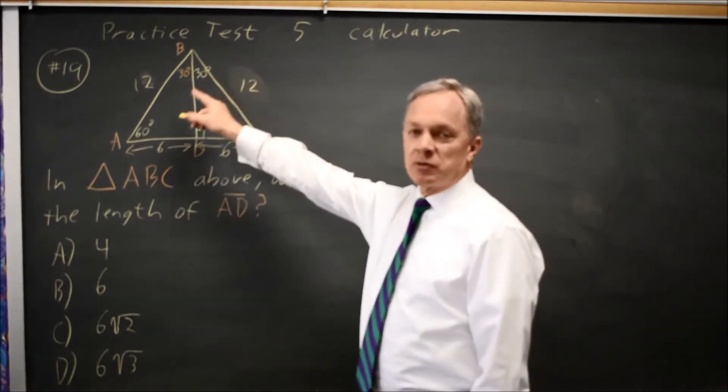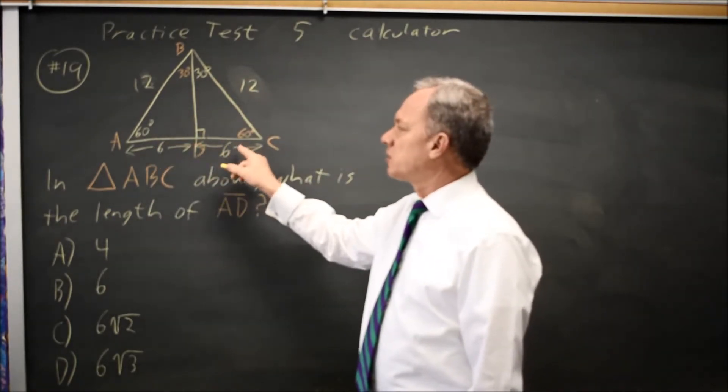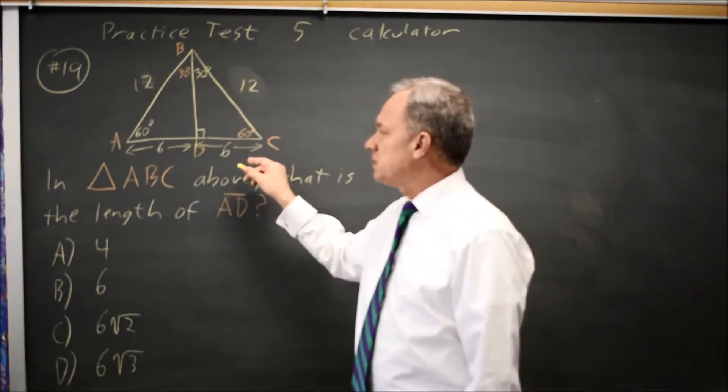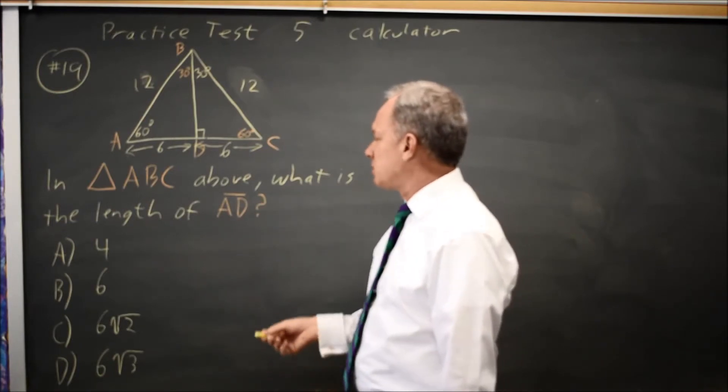Alternatively, from the 60, 60, 60, equilateral triangle, AC is 12. And since DC is 6, the remainder, AD, is also 6.